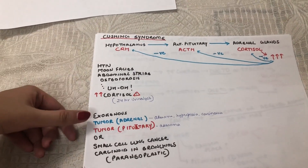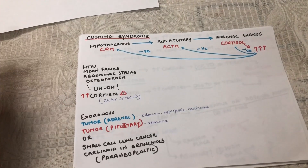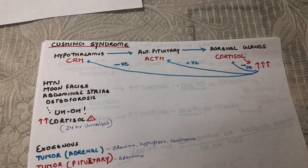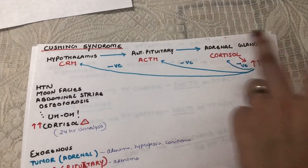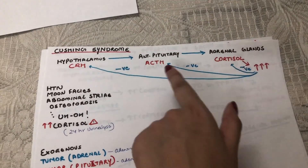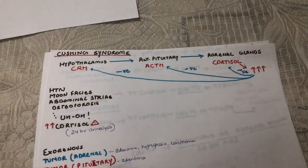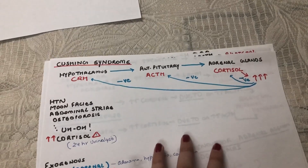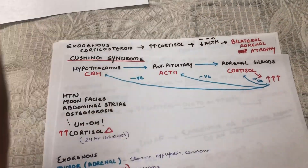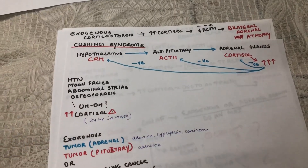The first and most common cause is exogenous glucocorticoid use — someone taking a lot of steroids to curb inflammation from a chronic condition. That person will have excess cortisol in their blood. The pituitary sees this and stops secreting ACTH via negative feedback. With no ACTH stimulation, the adrenal glands shrink, causing bilateral adrenal atrophy.